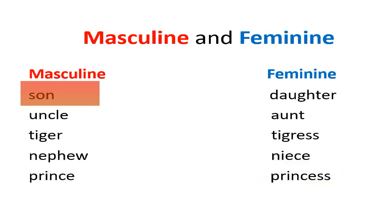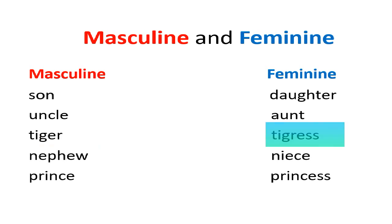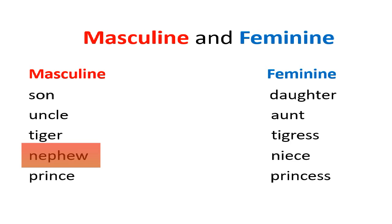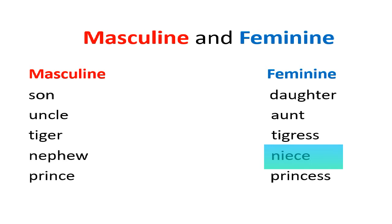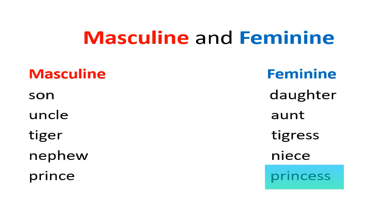Some more examples of masculine and feminine: son and daughter, uncle and aunt. Tiger is a masculine noun and its feminine noun is tigress, T-I-G-R-E-S-S. Next is nephew — nephew is a masculine noun and its feminine noun is niece. Nephew can be the son of one's brother or sister; similarly, niece can be the daughter of one's brother or sister. And the last one: prince is a masculine noun and its feminine noun is princess.